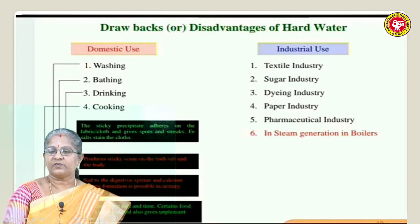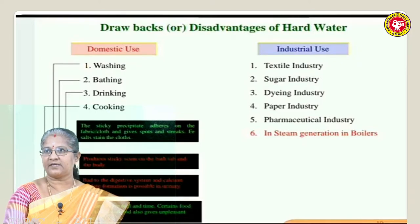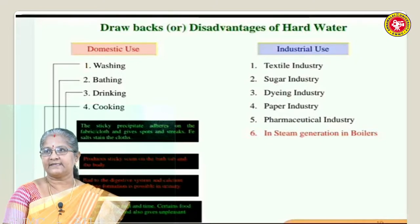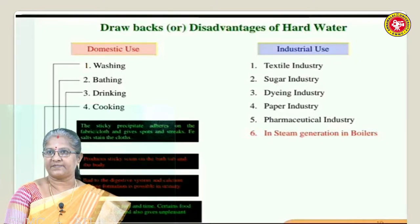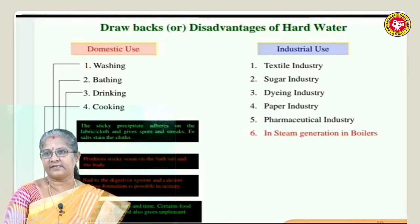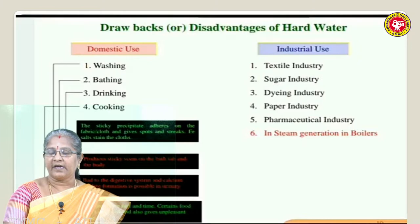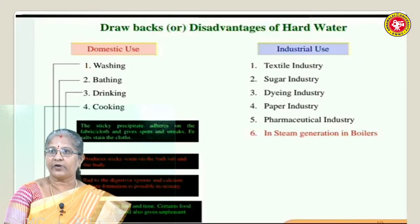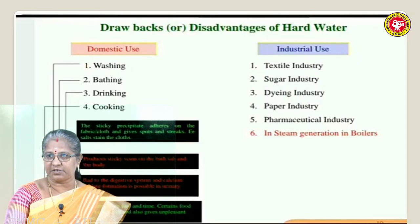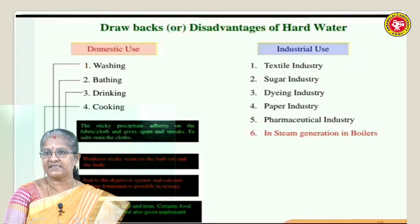If we discuss the drawbacks or disadvantages of hard water, we can categorize them into two types: domestic use and industrial use. In domestic use we use water for washing purposes, bathing purposes, drinking, and cooking.